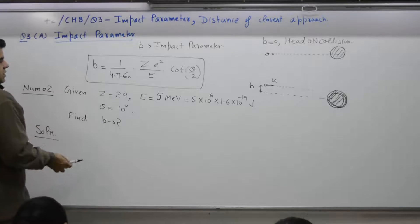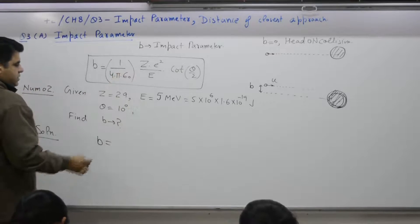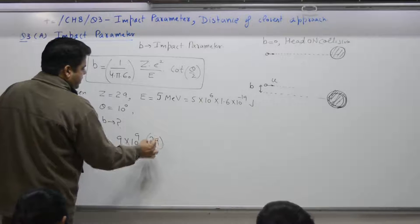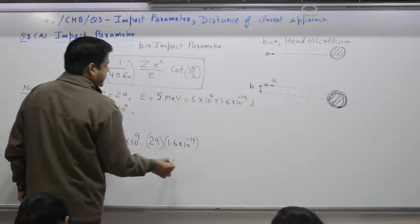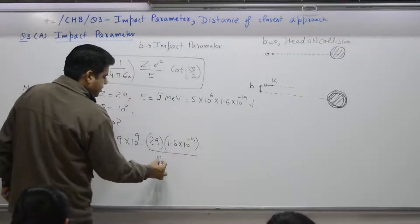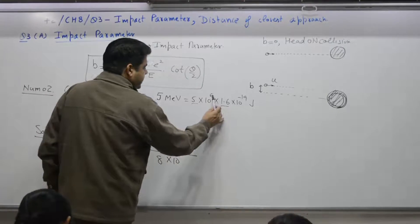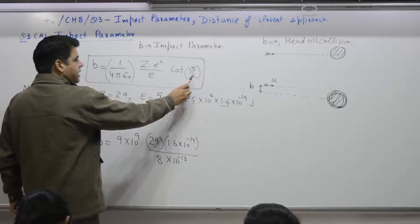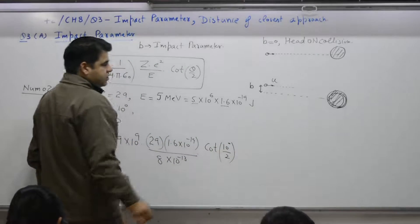Formula for B is what? Yes, B is equal to 1 by 4 pi epsilon value please. 9 into 10 raised power 9. Z, 29. E, 1.6 into 10 raised power minus 19 divided by E. E comes out to what? 8, 5 into 1.6. 8 into 10 raised power minus 19 and 6 minus 13. Cot, theta, 10 by 2.